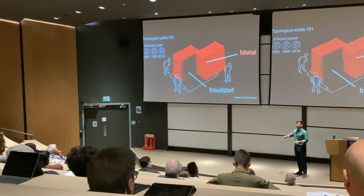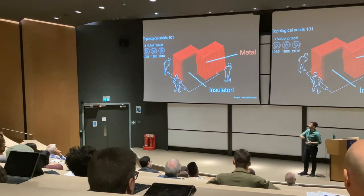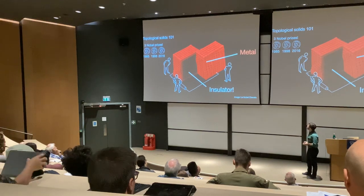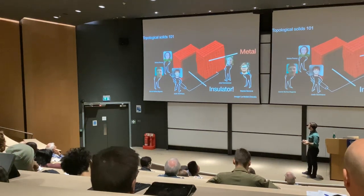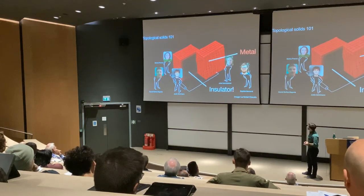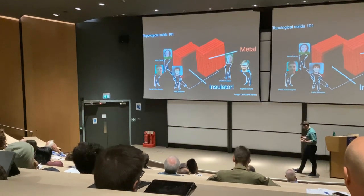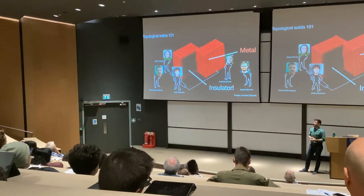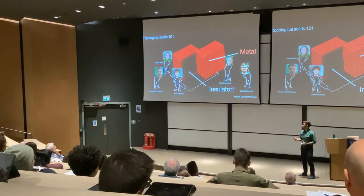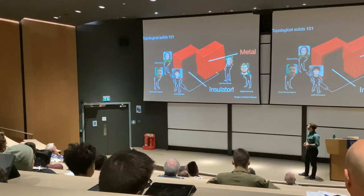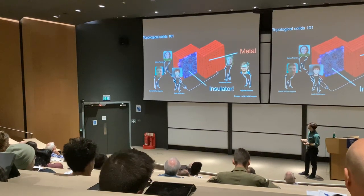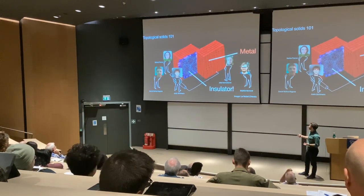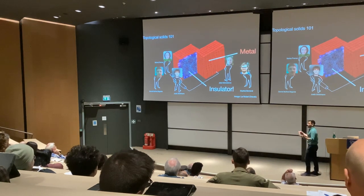This can happen in two dimensions as well — you can have an insulating bulk with something conducting running around the edge of a sample. My group has studied these, and what we're doing is trying to understand how they survive disorder. It's really hard to eliminate this metallic state from the surfaces.